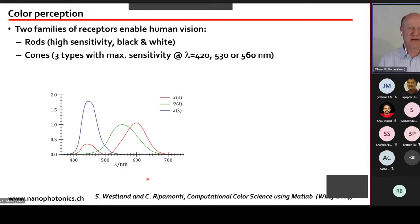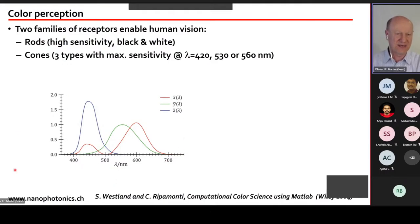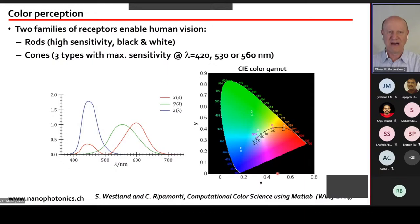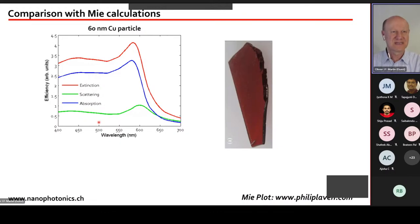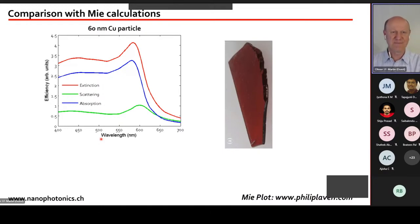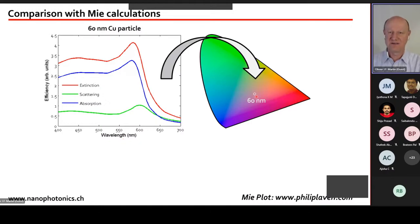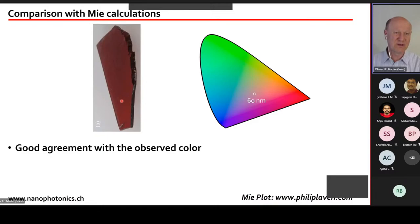To verify the copper origin of the color, we calculated the extinction, scattering, and absorption of 60 nm copper particles, then mapped this spectrum into the CIE color space using the three human eye receptor sensitivities — blue, green, and red. The predicted color falls in very good agreement with the observed reddish color of the glass. So our ancestors were indeed doing plasmonics — but with copper, not gold.